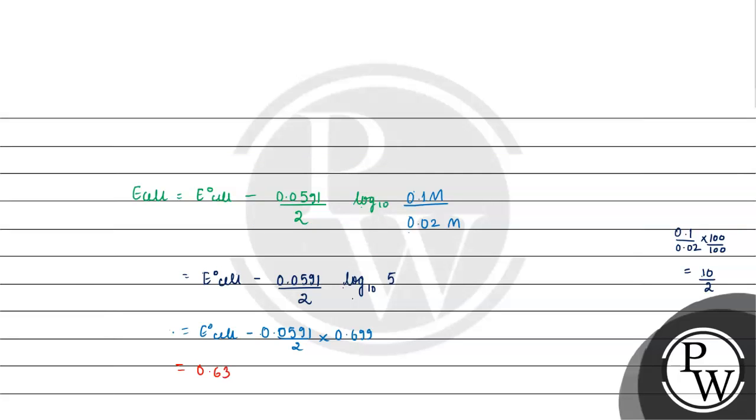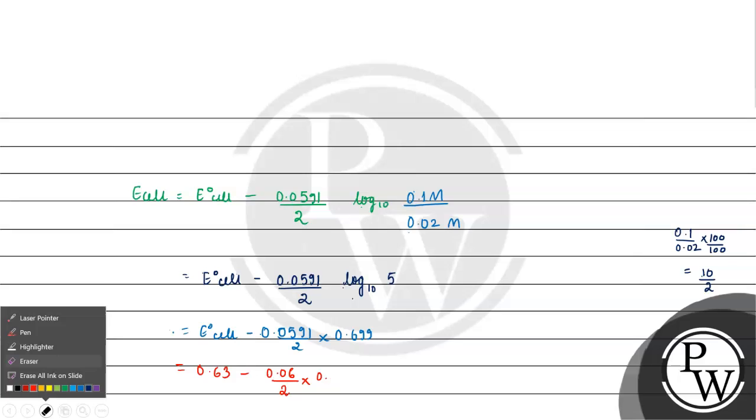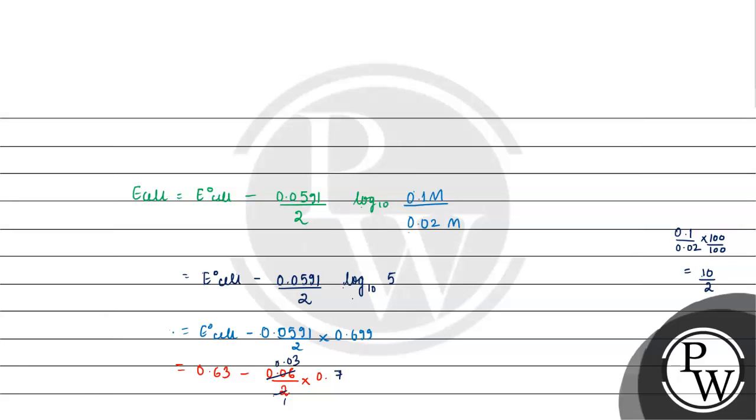So 0.63V minus 0.0591 by 2 into 0.699. This gives 0.63V minus 0.03V, which equals 0.6V.